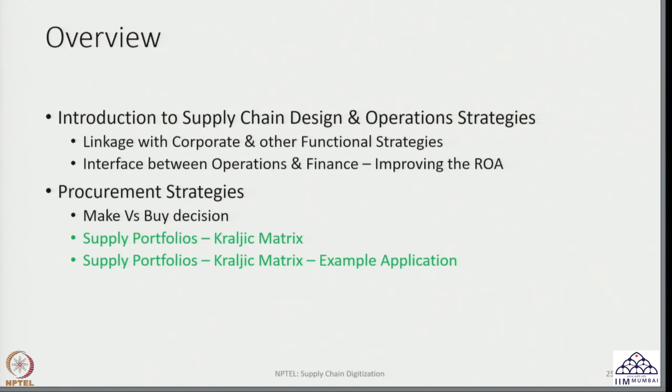In the last session we had a brief introduction to what the Kraljic matrix is and the nature of the segmentation carried out in it. The basis for segmentation is supply risk and profit impact. When we speak about supply portfolios used in the Kraljic matrix, there are different types of metrics: supply-side metrics, which we call supply risk, and on the other hand, metrics related to profit impact through the procurement of items. The supply portfolio can be designed not just for procurement of products or items but also for services and work orders — it can extend to any kind of procurement.